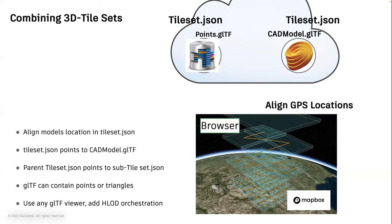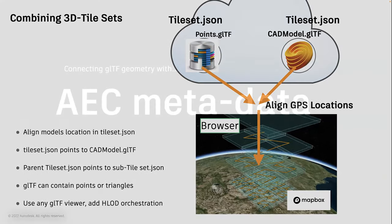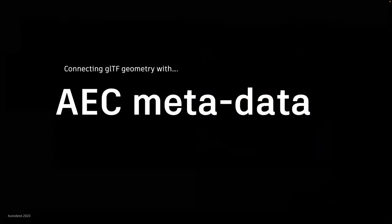From the Mapbox example, this is where alignment comes into play. If I have my CAD model and align it with an extension such as GeoPose, and do the same for a point cloud set, I can convert my points and CAD models and have multiple tile sets layered together into a single scene — that's what the Mapbox example was about.